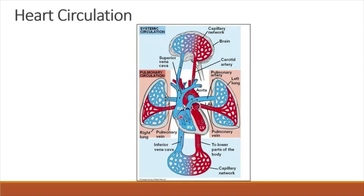Deoxygenated blood in the right atrium enters the right ventricle. When the right ventricle contracts, the blood is pumped into the pulmonary artery that branches off into the right pulmonary artery and left pulmonary artery. The pulmonary artery carries deoxygenated blood to the capillary beds in the right lung and left lung.